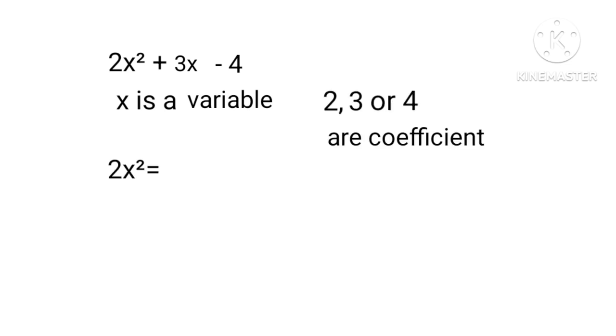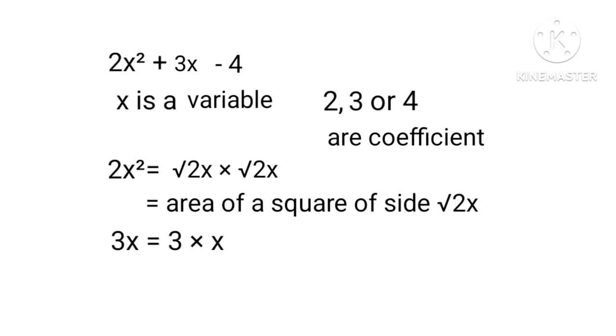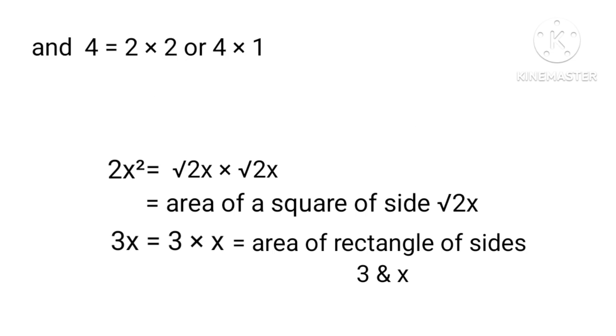Mathematically speaking, 2X² equals √2X into √2X, equal to area of a square of side √2X. 3X equals 3 into X, equals area of rectangle whose sides are 3 and X. 4 equals 2 times 2 or 4 times 1.